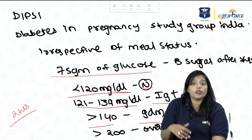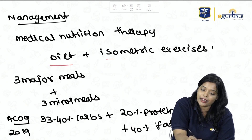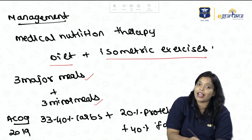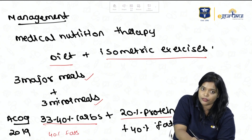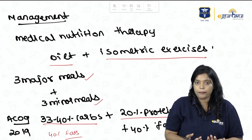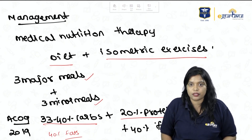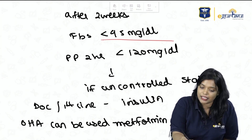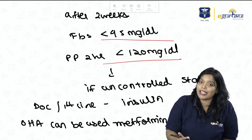When sugars are abnormal, the first step is medical nutrition therapy: diet and isometric exercises. Diet consists of 3 major meals and 3 minor meals. According to ACOG, dietary composition should be 33–40% carbs, 20% proteins, and 40% fats. Isometric exercises include walking or upper body exercises. Wait 2 weeks; if fasting becomes less than 95 or postprandial less than 120, continue diet. If uncontrolled, start medication.